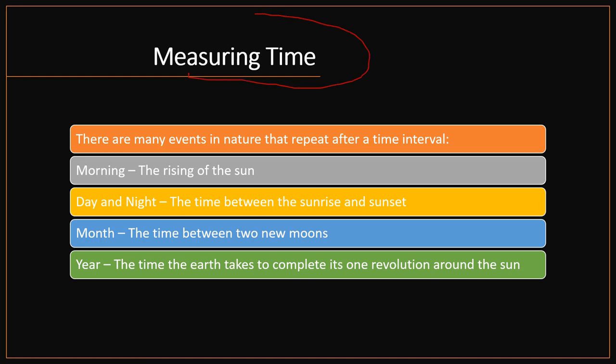About time: there are many events in nature that repeat after a time interval. The rising of the sun every morning gives us day and night — day is from sunrise to sunset, and night is from sunset to next sunrise. A month is the time between two new moons. A year is the time the earth takes to complete one revolution around the sun — one year equals 365 days.